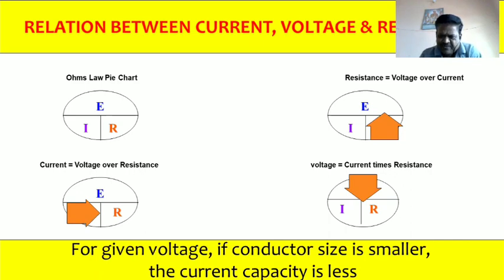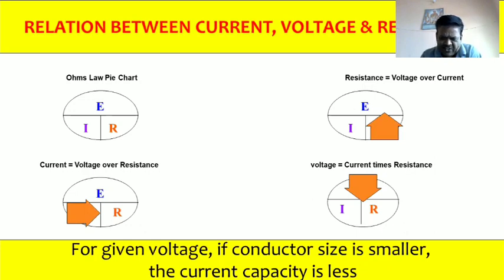As per this relation, current is inversely proportional to resistance. As the resistance of the conductor increases, the current flow decreases. As the resistance decreases, the current increases. If the resistance goes to zero, there is no opposition and the flow of electrons will be maximum — that is called high current, also called dangerous or heavy current. This will be explained further in the next slides.